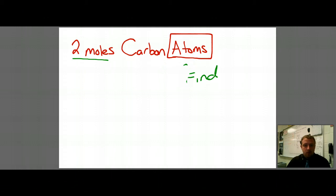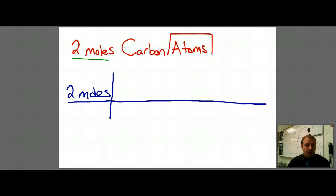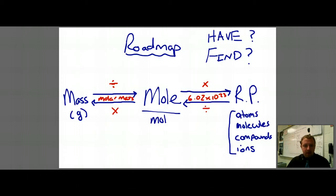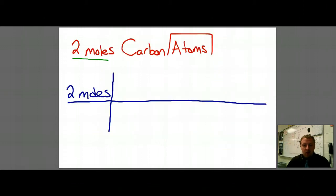So what we're going to do here is we're going to set up our problem and say, there's two moles of carbon. Now it doesn't actually matter if I'm working with carbon or whatever, because according to my roadmap, the only thing that matters when I'm converting between moles and particles is this number right here, which is the same no matter what I'm working with. So I could be working with anything and two moles would be exactly the same.